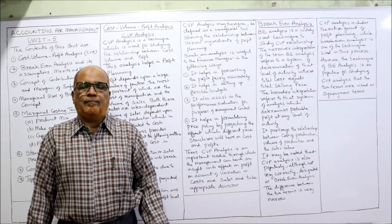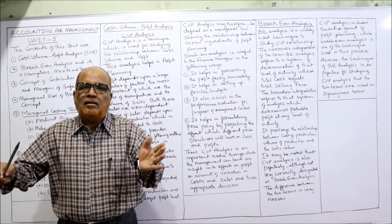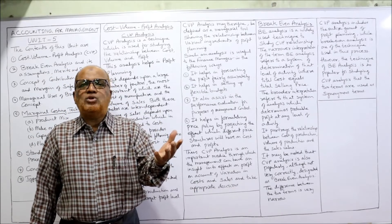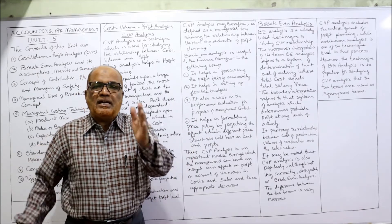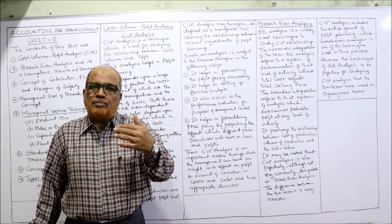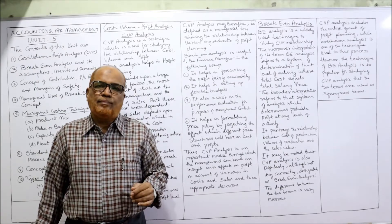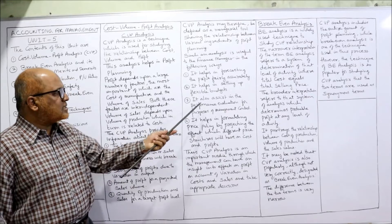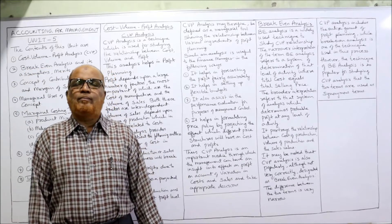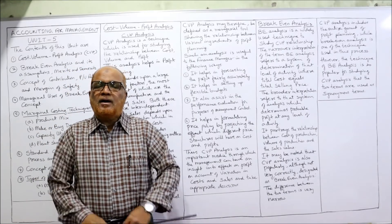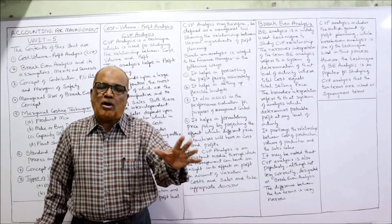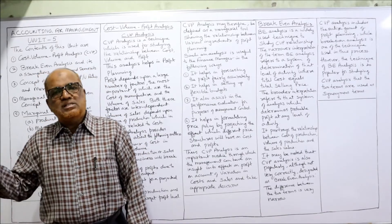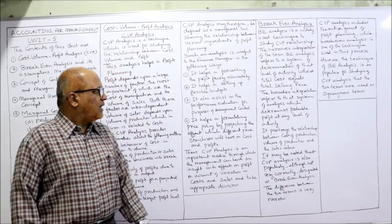Second, CVP analysis helps in setting up a flexible budget. A budget is a plan of activity for a future period. Since the future is uncertain, we make a flexible budget at different levels of activity — for example, projections of 10,000, 15,000, or 20,000 units of sales. Third, it assists in performance evaluation for management control — ensuring that what has been planned is actually being achieved.